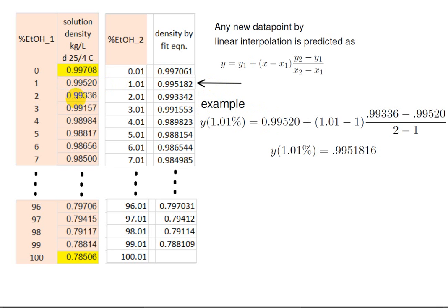y2 is right here. x1 is right there, that's 1, and x2 is 2. And then the x that you see right here is 1.01. So you just plug all that data in over here and it pops out 0.995182 or 0.9951816 if you carry out a little bit more decimals.